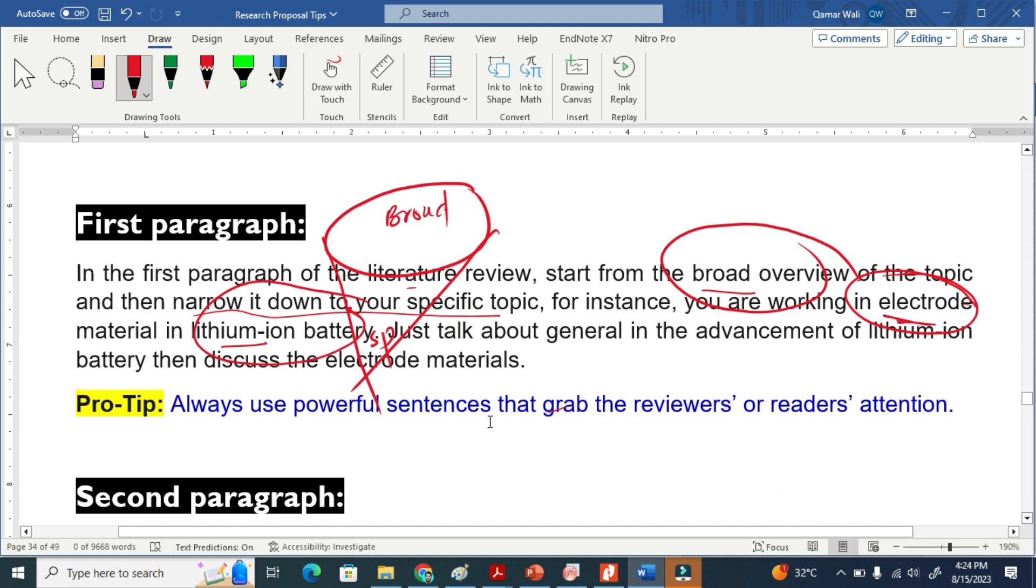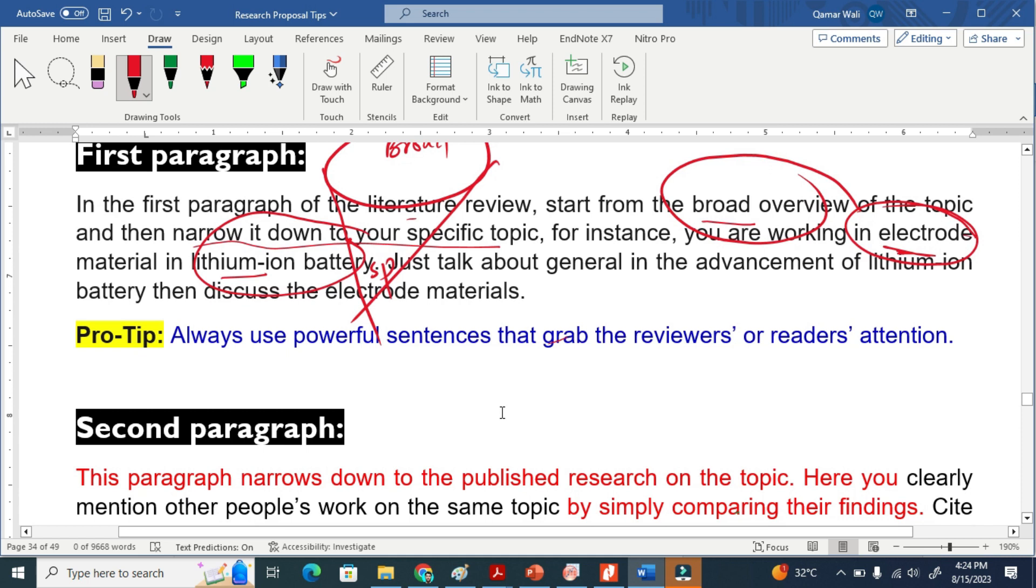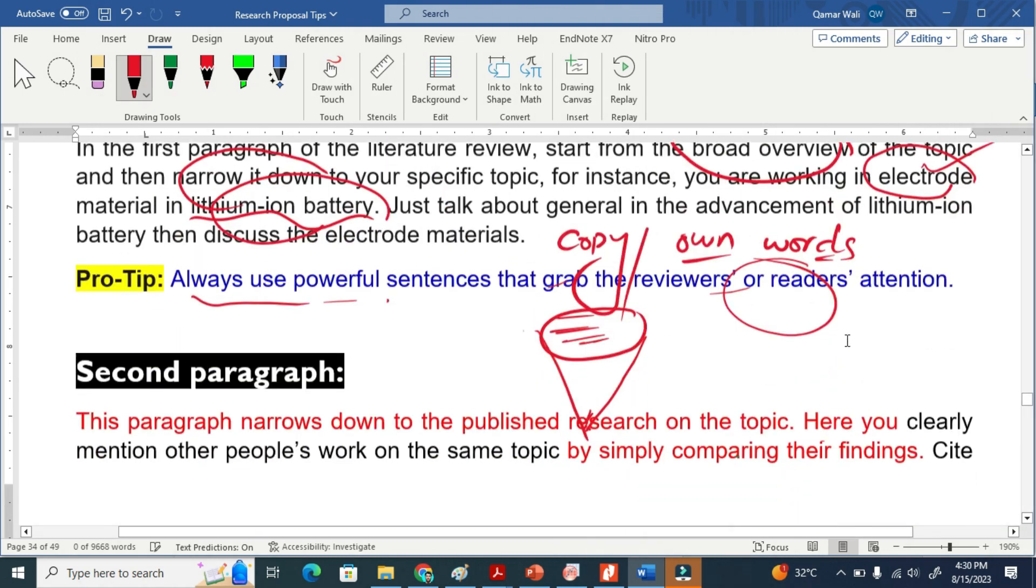In this first paragraph, we have to use strong and powerful sentences that will attract the reviewer or reader attention. So we need to have very good sentences. Just copy those sentences from other researchers, but use it in your own language. Own language.